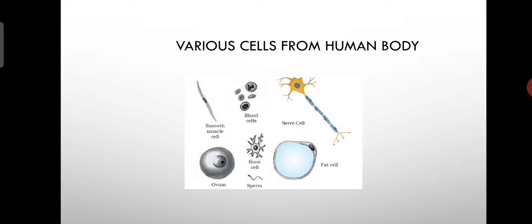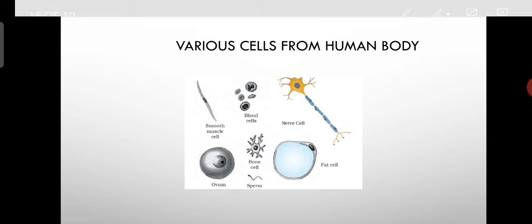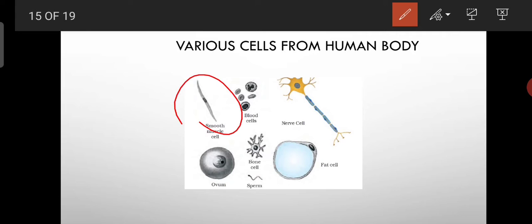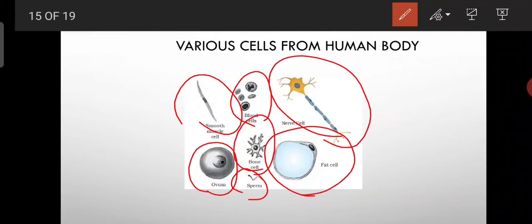So you can see these are various cells from the human body. This is the muscle cell, this is the blood cell, this is the nerve cell, this is the fat cell — the adipose cells. This is sperm, this is ovum, and this is the bone cell. So these are various kinds of cells, each performing their own functions.